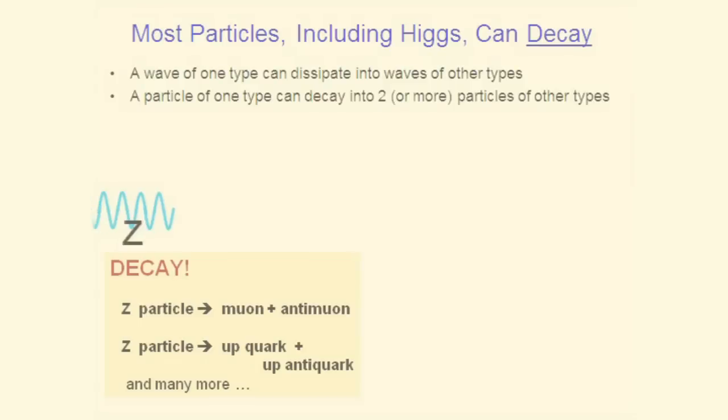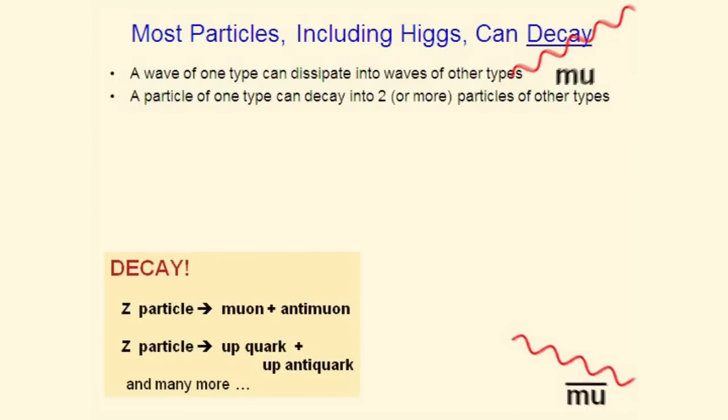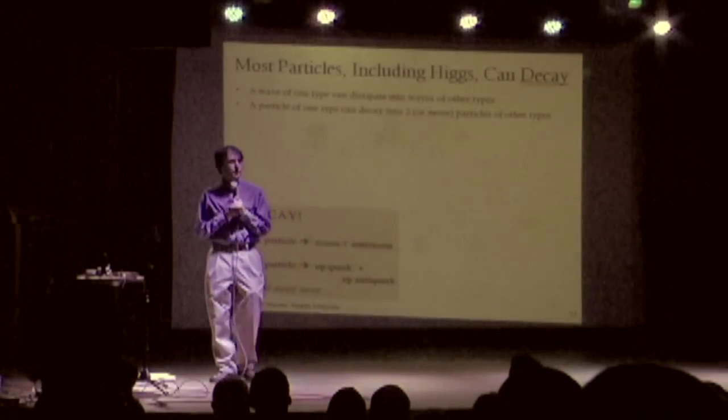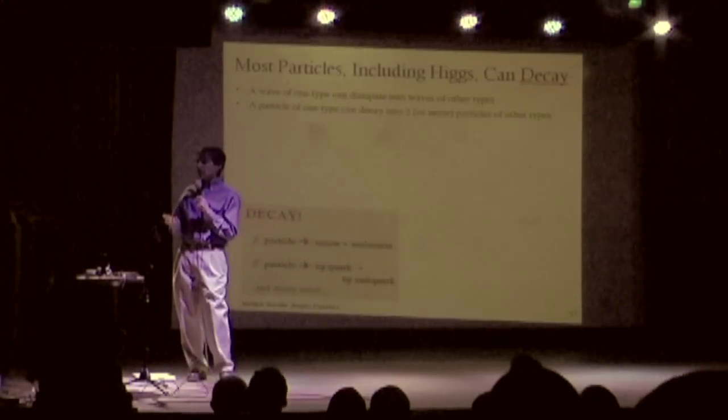So here's a Z particle coming in and it just disappears into a muon and an anti-muon. That's just something that nature does. It's dissipation at the quantum level.